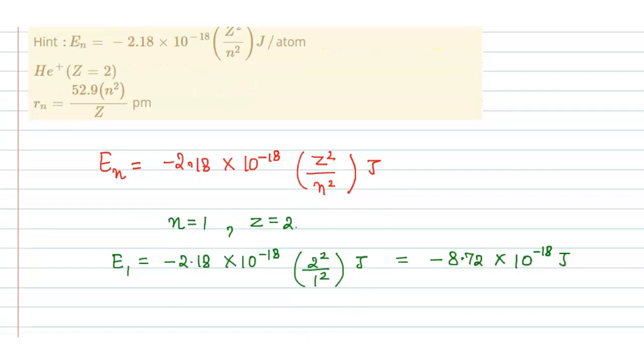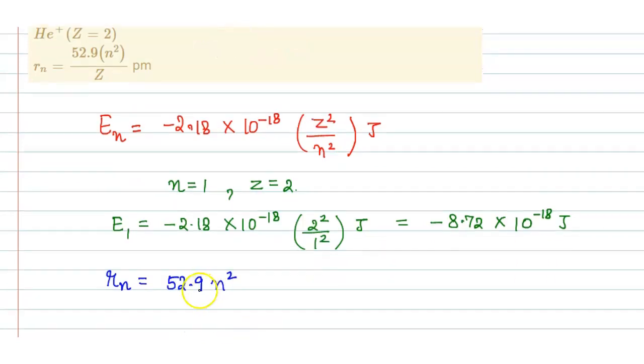Now we have to calculate the radius of this orbit. The radius of this orbit is given by this formula. It is Rn equals 52.9 n square upon z in picometers.